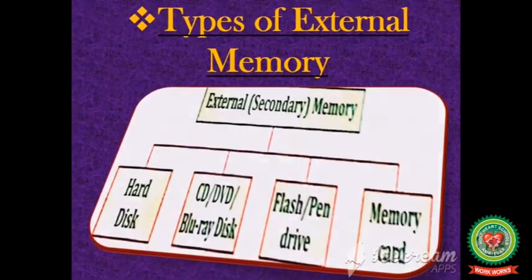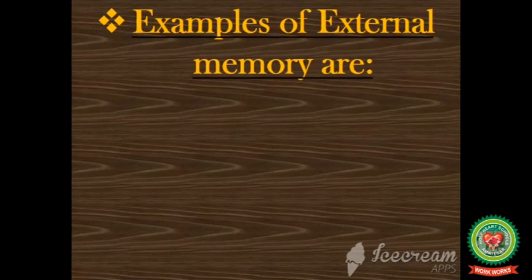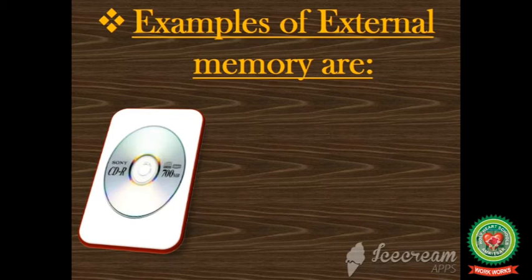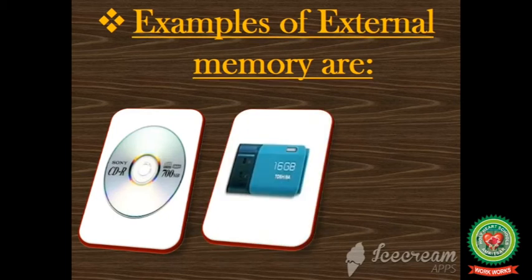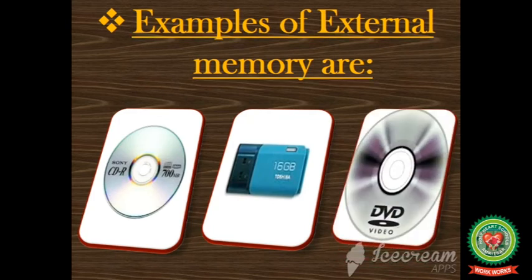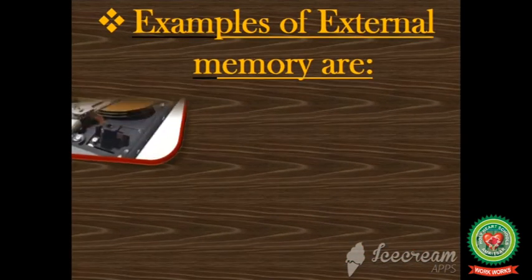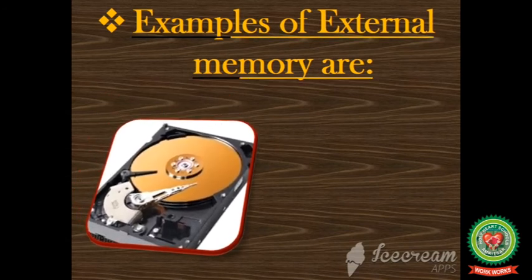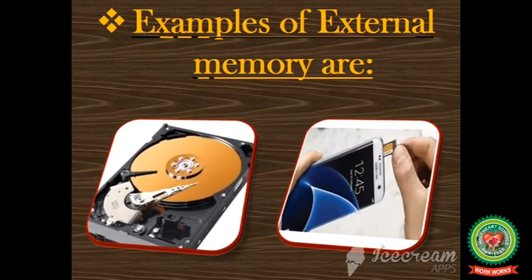The types of external memory are: first, CD; second, pen drive or flash drive; third, DVD; fourth, hard disk; and fifth, memory card.